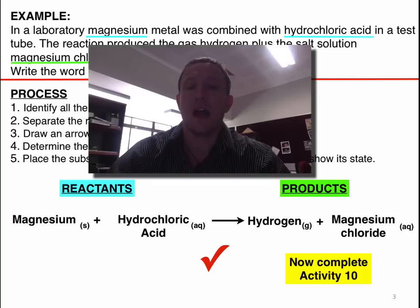Now, have a go at practicing these skills by doing activity 10. This will take you through a variety of different reactions. All you have to do is follow the process, as shown above. Join me for the next activity, where we're going to talk about how we turn this into a chemical equation. Thank you for listening.